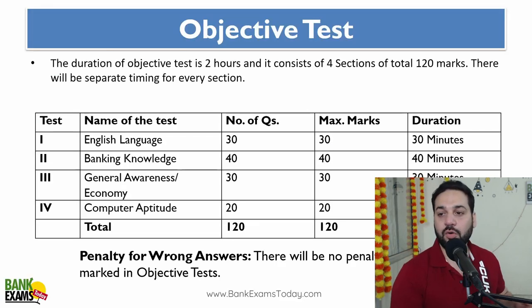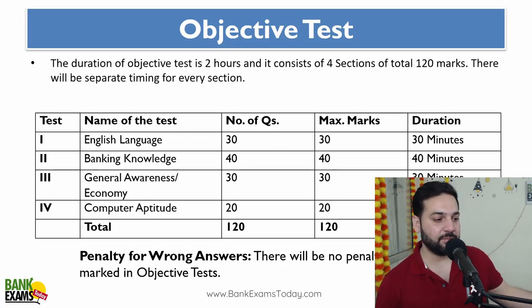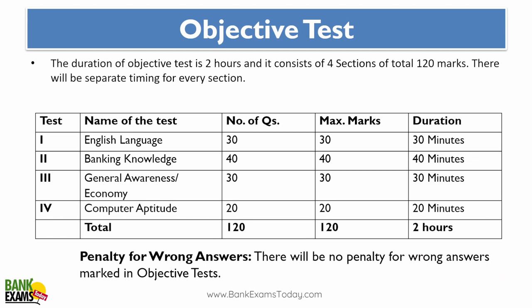First of all, give a look to the syllabus. There is English language, banking knowledge, general awareness and economy, and then computer aptitude. For English language, 30 questions with maximum 30 marks. Banking knowledge, 40 questions, 40 marks. General awareness and economy, 30 questions, 30 marks. And computer aptitude, 20 questions and 20 marks.